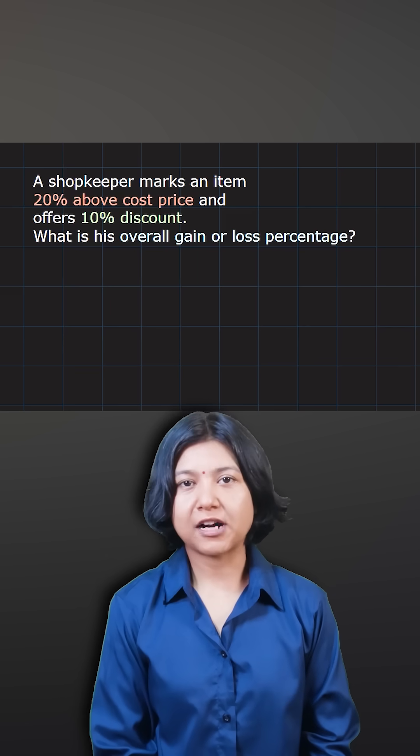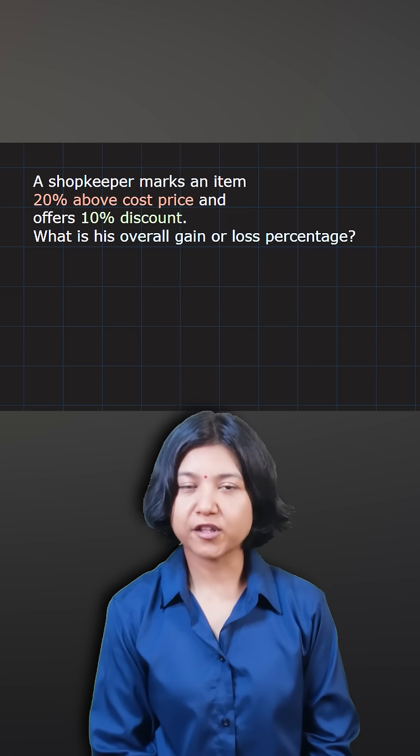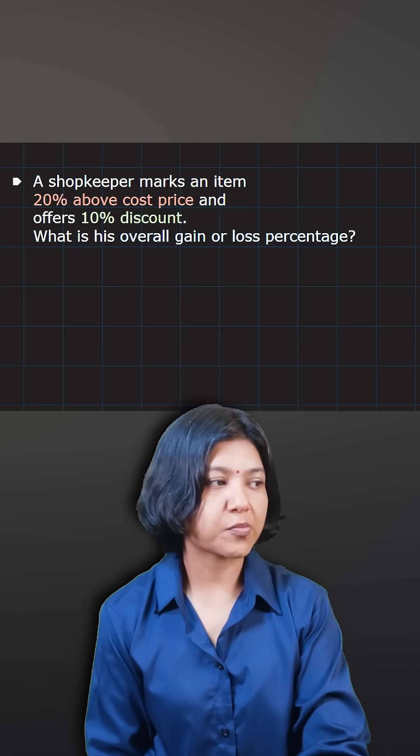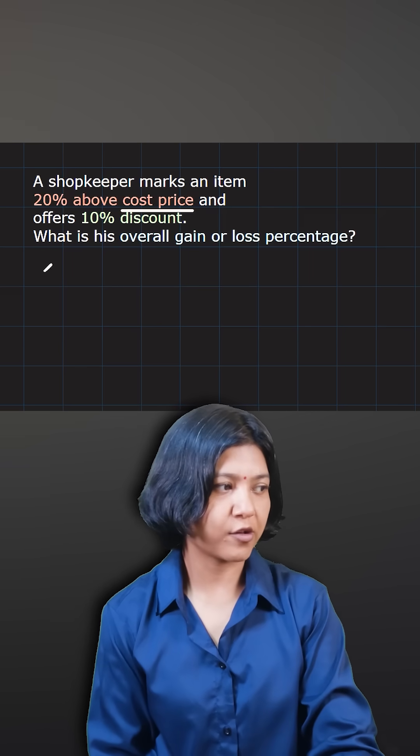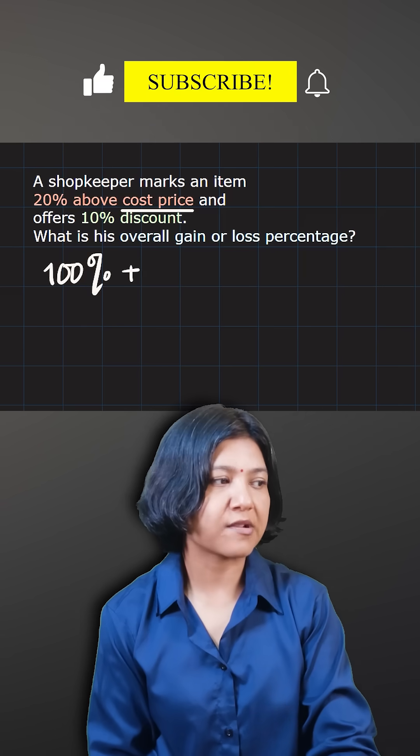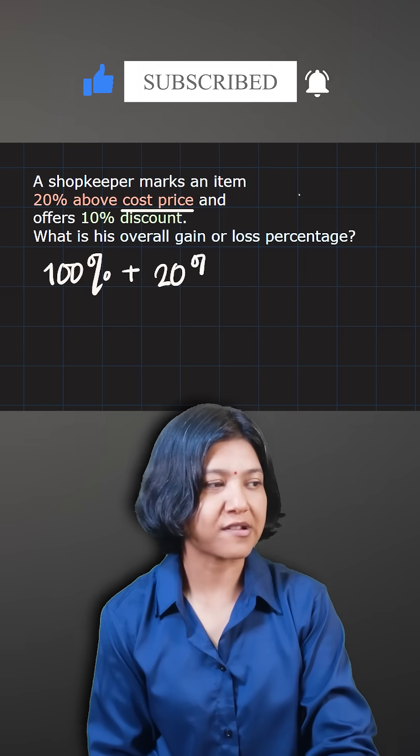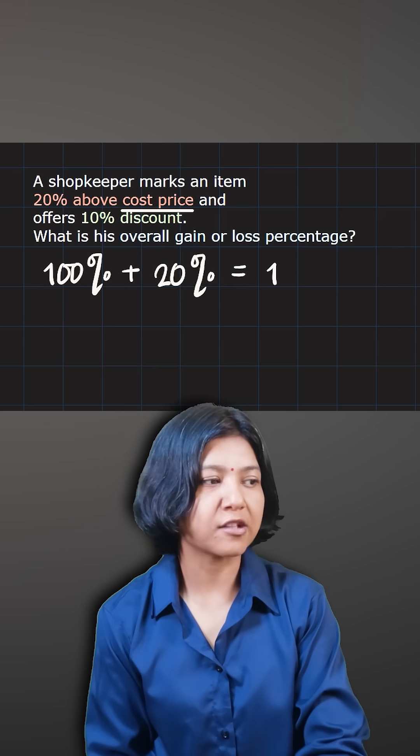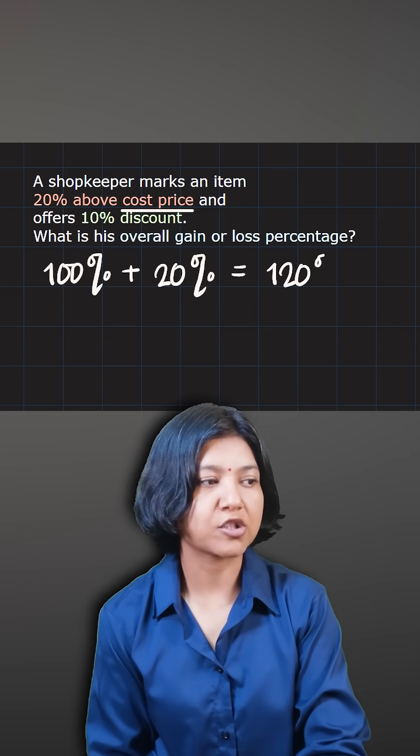You are a shopkeeper. You want to mark the price 20% above the cost price. Remember the cost price is always 100%. So what you are paying as a shopkeeper is always 100%. You want to mark it 20% above.